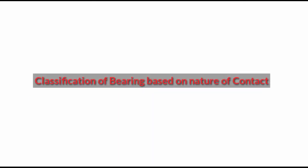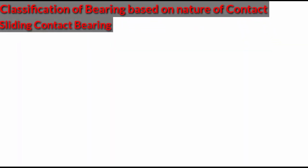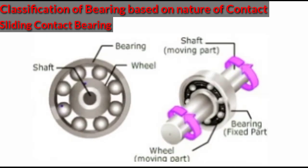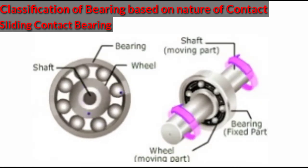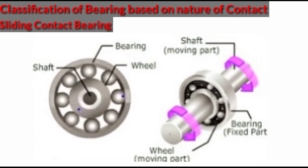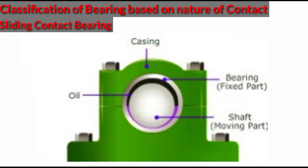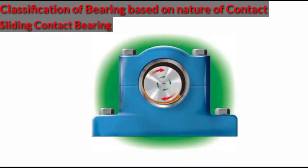Coming to the classification of bearing based on nature of contact: sliding contact bearing. In sliding contact bearing, the sliding takes place along the surface of contact between the moving element and the fixed element. Sliding contact bearings are also known as plain bearings. When the sliding action is along the circumference of a circle or an arc of a circle, carrying radial load, they are known as journal or sleeve bearings.